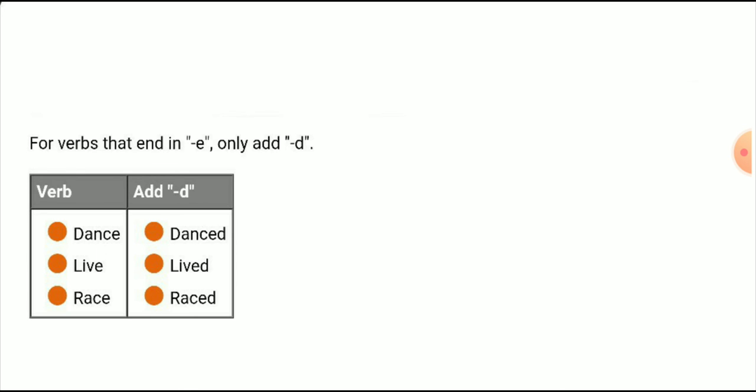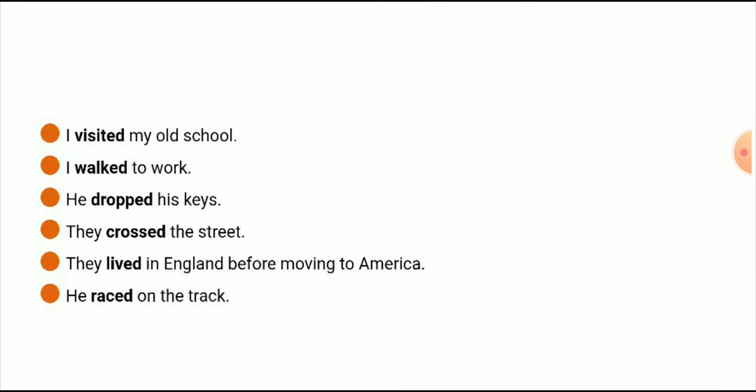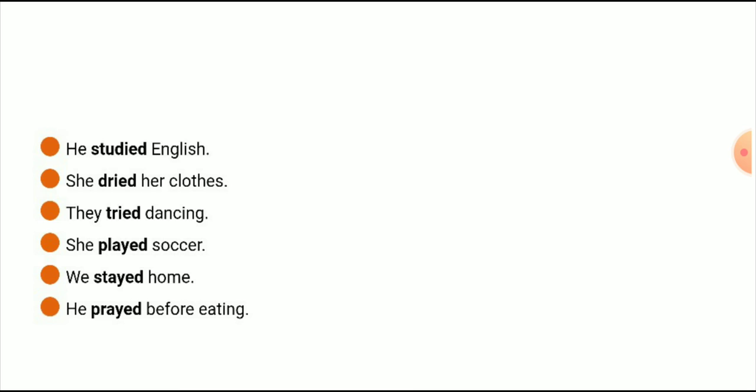Here is an example: 'I visited my old school.' The subject is 'I' and the second form of the verb is 'visited' — first form is 'visit', but we use the second form according to the past tense formula. More examples: I walked to school; he dropped his keys; they crossed the street; they lived in England before moving to America; he raced on the track; he studied English; she dried her clothes; she tried dancing; she played soccer; we stayed home; she prayed before eating.